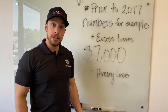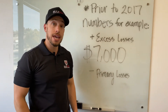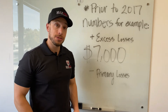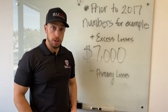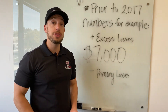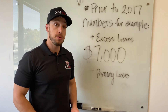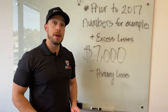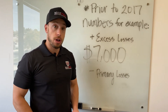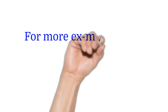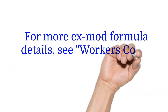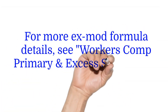The actual workers' comp loss data is separated into primary and excess pools. Primary losses, which are the first $7,000 of every loss prior to 2017, measure frequency. Excess losses, which are amounts more than $7,000, measure severity. Note that after 2017 this equation increased in complexity, covered more in the video on workers' comp primary and excess split points.